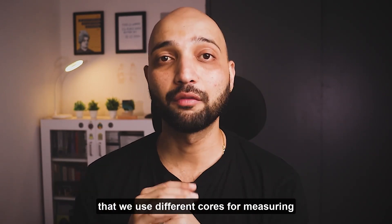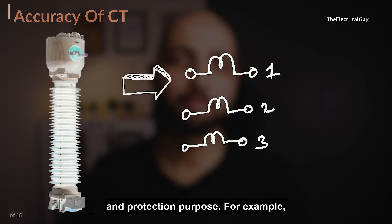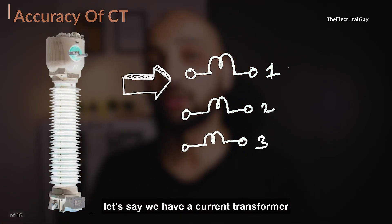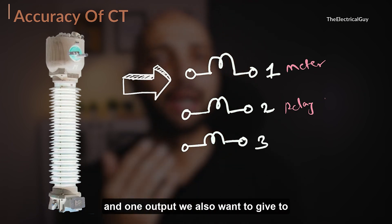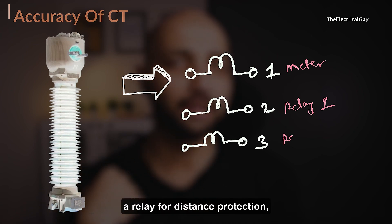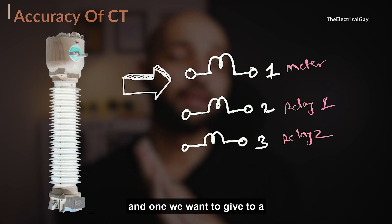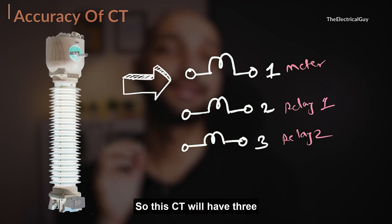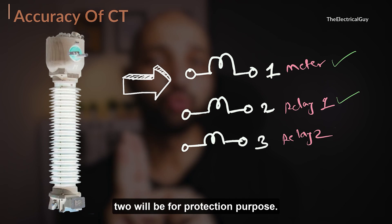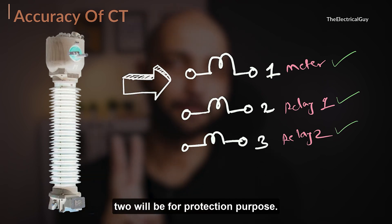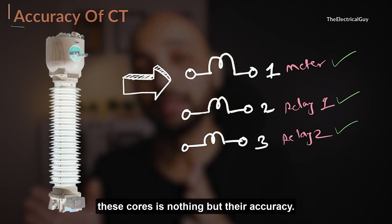The first thing to keep in mind is that we use different cores for measuring and protection purposes. For example, a current transformer might have one output going to a meter to measure current, one output going to a relay for distance protection, and one going to a differential protection relay. So this CT will have three different cores — one dedicated for measurement and two for protection — and what creates the difference between these cores is their accuracy.